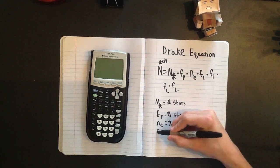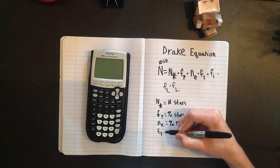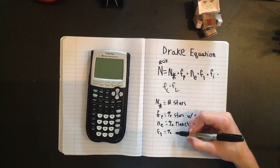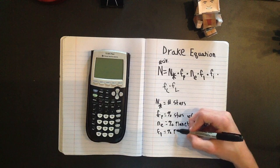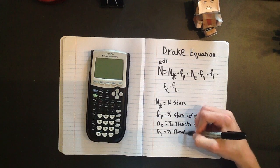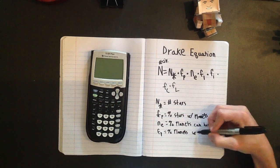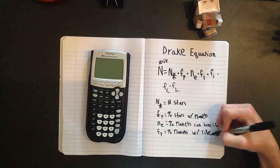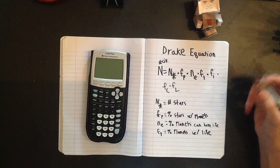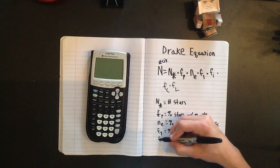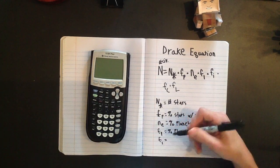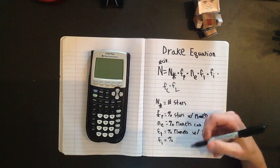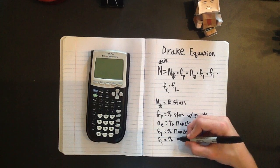F sub L, little L, is the percentage of those planets that do have life. F sub I is the fraction of those that have intelligent life.